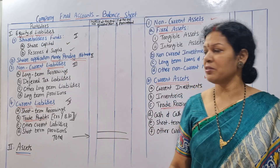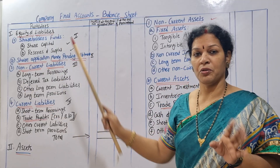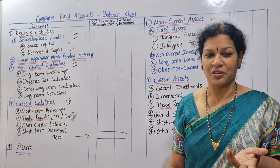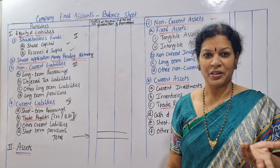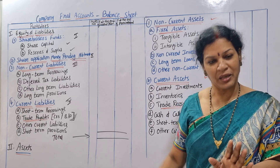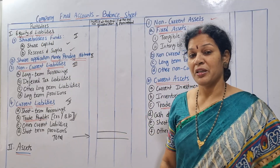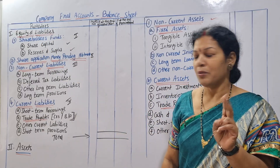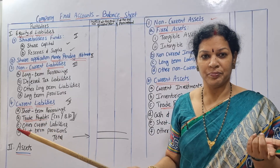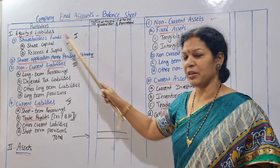Shareholders funds — we always know the balance sheet has equity share capital and preference share capital. What we need is shareholders funds, which has two parts. One is the share capital, that is the capital.